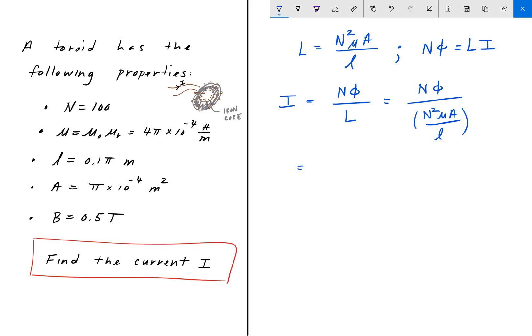And now we can rearrange that as follows: N²μA. The N's here cancel, and then we're left with flux·L over N·μ·A.